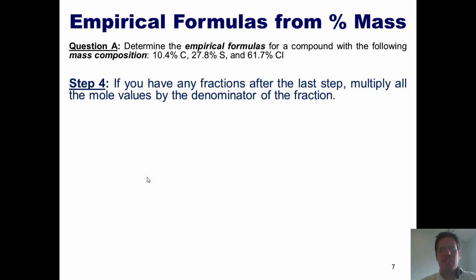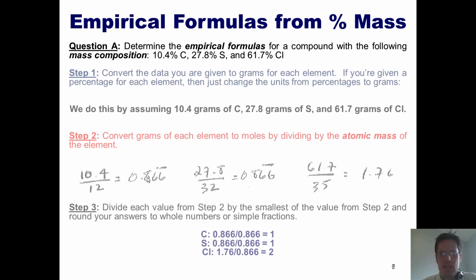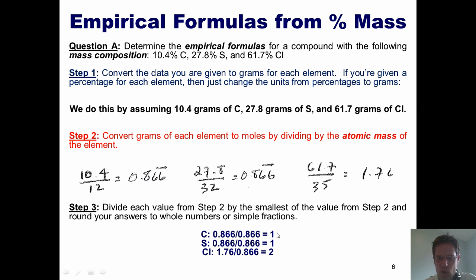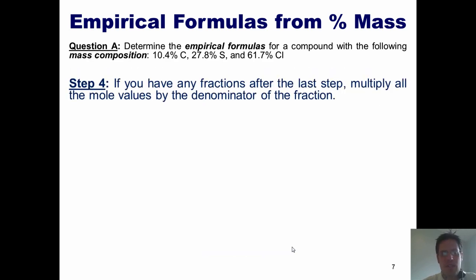Step four, if I have any fractions after the last step, I multiply them all by whatever I need to to get nice neat whole numbers. Let's look back at this. I've got one, and one, and two. Are any of these guys fractions or decimals? Absolutely not, which means that this is not applicable for this particular problem.